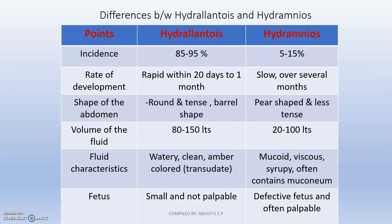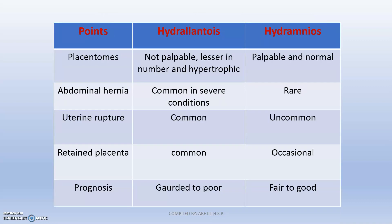Looking at the differences between hydroallantois and hydramnios: incidence of hydroallantois is much higher at nearly 95%, whereas hydramnios is rare. Rate of development — hydroallantois develops within 20 days to 1 month, while hydramnios is very slow, over several months. Type of abdomen — hydroallantois gives a barrel shape, whereas hydramnios is pear shaped and less dense. Volume of fluid is nearly 150 liters in hydroallantois and about 100 liters in hydramnios. Fluid characteristics are watery amber-colored in hydroallantois and mucoid, viscoid, syrupy, often containing meconium, in hydramnios. Uterine rupture is common in hydroallantois and uncommon in hydramnios. Prognosis is guarded to poor in hydroallantois and fair to good in hydramnios.